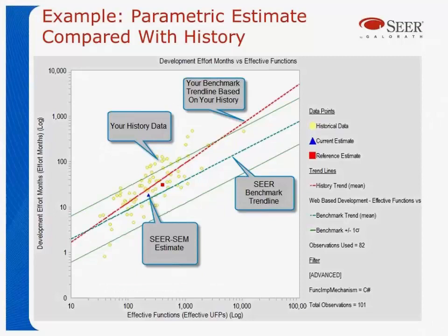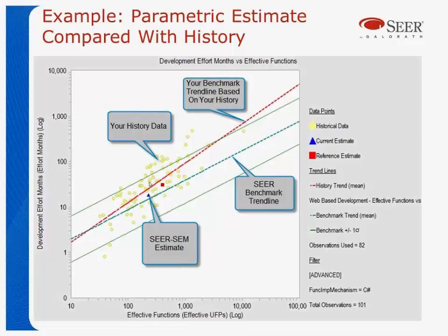Here's an example from our SEER model plotting an estimate versus reference classes. You can see the estimate from SEER SEM and another re-estimate — basically the range of SEER estimates. Here are historical data points with trend lines. The likely estimate is probably somewhere close to the middle, but it looks like it might be a little optimistic. That doesn't mean SEER did a bad job, but it does mean the input parameters ought to be looked at again to verify they're viable.